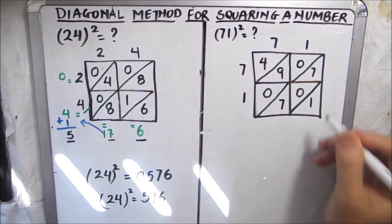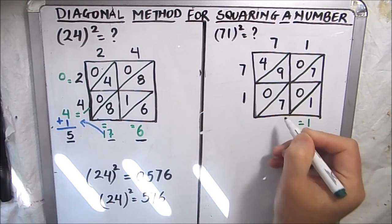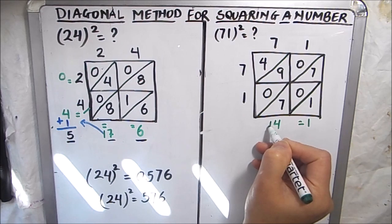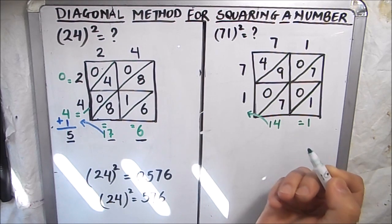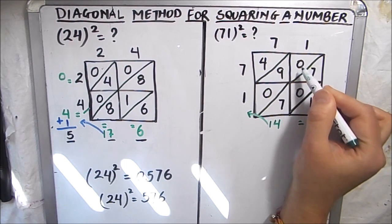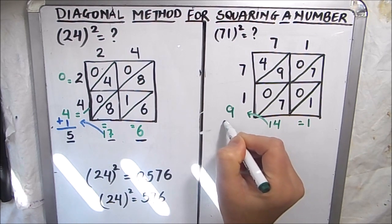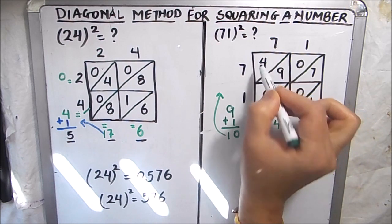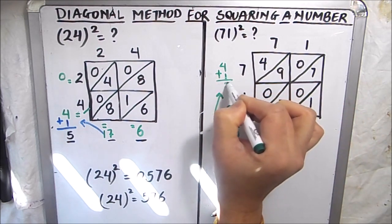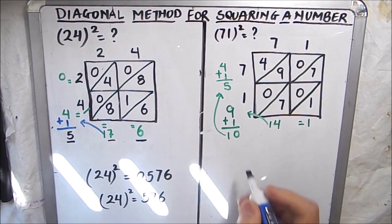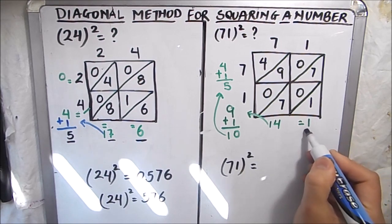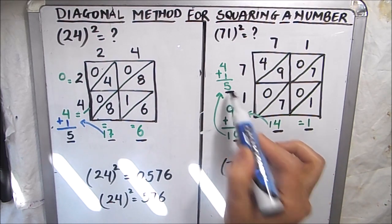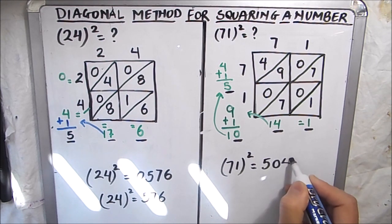Now we add the diagonals. The first diagonal is 1. The next is 7 plus 0 plus 7, which is 14 — we carry the 1 to the next diagonal. The next diagonal is 9, and adding the carry gives 9 plus 1 equals 10 — we carry 1 again to the next diagonal. The final diagonal is 4 plus 1 equals 5. Reading the digits — 5, 0, 4, 1 — 71 squared is 5041.